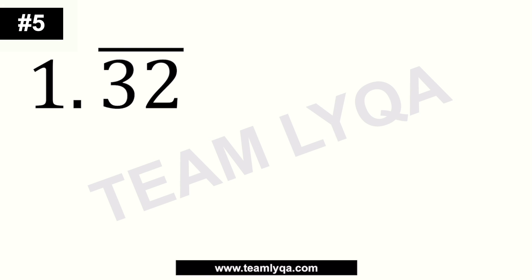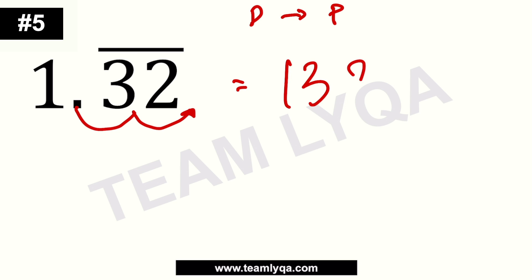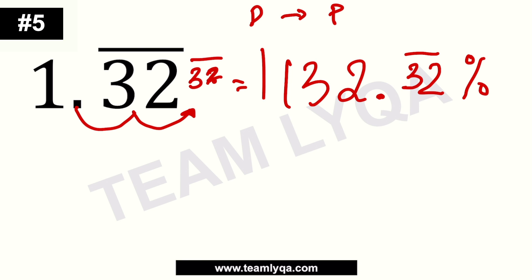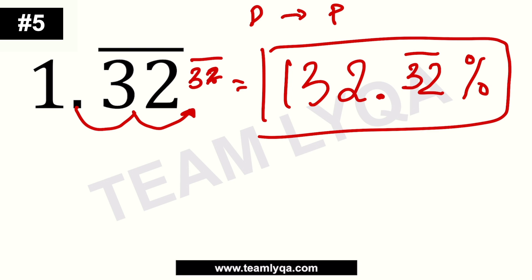This is a decimal — we're going to make it a percentage. Be very careful here because it's a repeating number. Converting to percent, we move to the right: 1, 2. This gives us 132. But because it's a repeating number, the 32 repeats. So we can write it as 132.32̄ percent, with 32 being the repeating part. In exams, you can write 132.32 if the bar version isn't in the options, but remember it's a repeating number especially if it appears in a word problem.